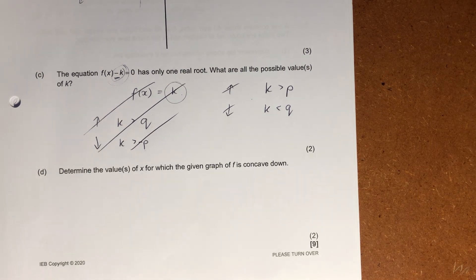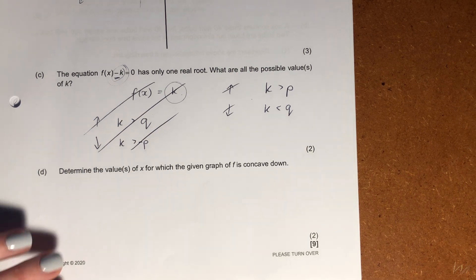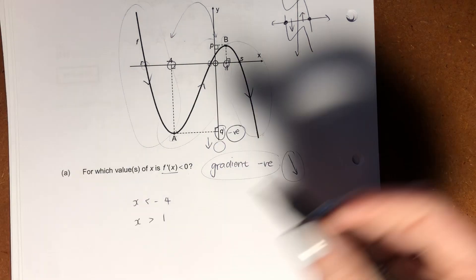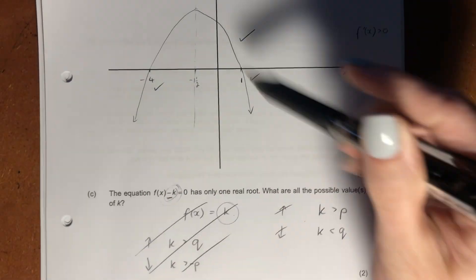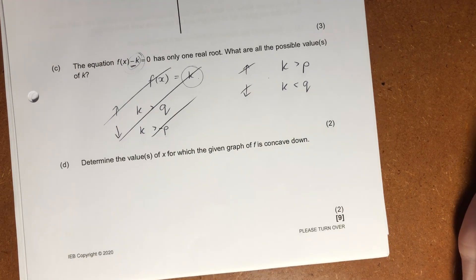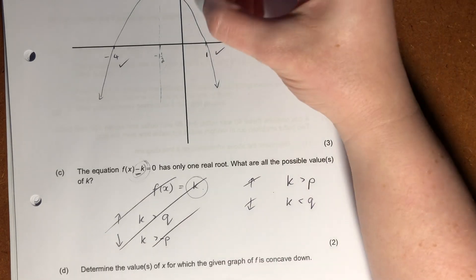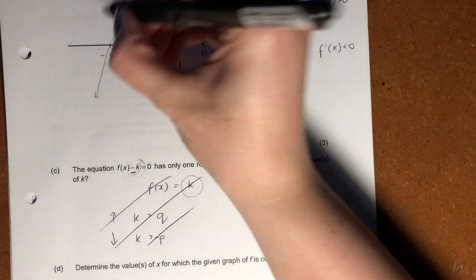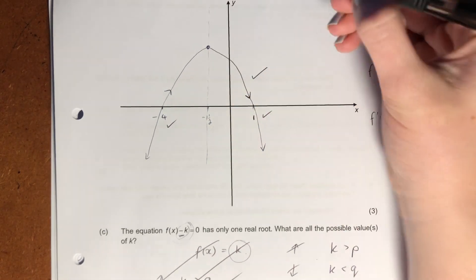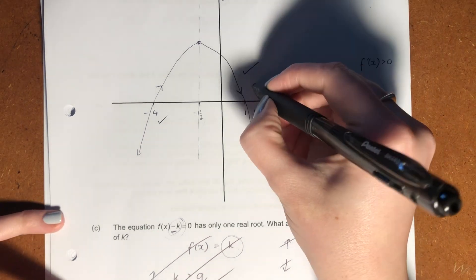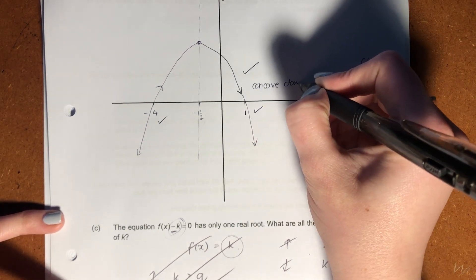This is also another sort of problem-solving complex thinking question. It says: determine the values of x for which the given graph of f is concave down. What do we mean by concave down? We know that this is our cubic, and we've done our gradient over here. When it says concave down, it means that you're looking at the gradient and you're looking at the negative side of the gradient. This is the positive side of the gradient, and that's the negative side. It changes at its turning point. So concave down is on this side, and this is concave up.